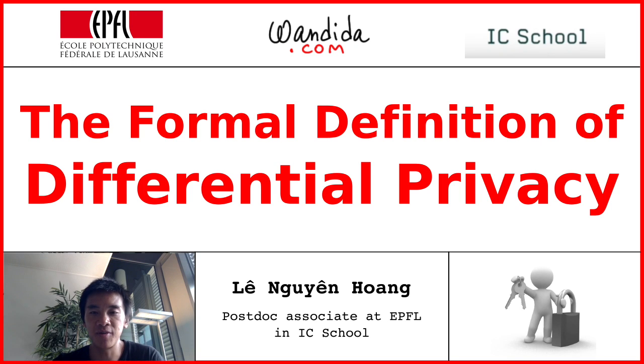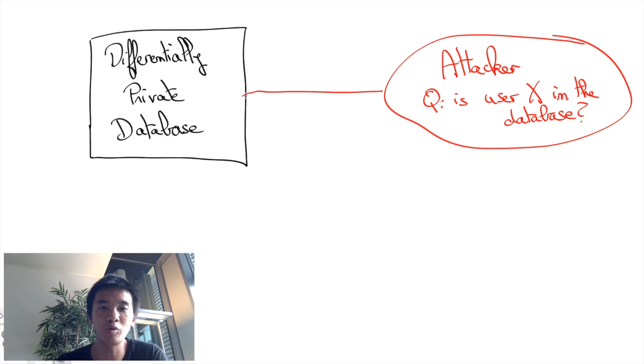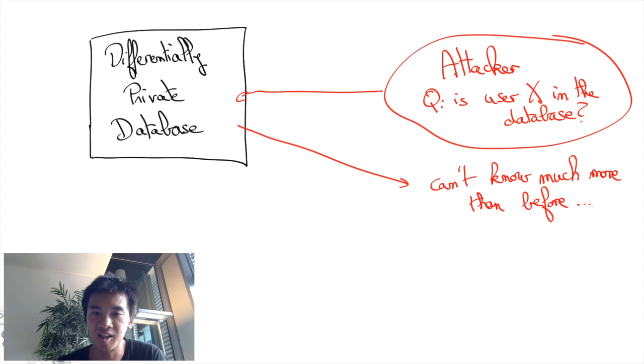In this video we will provide the formal definition of differential privacy. The basic idea of differential privacy is that it should be extremely hard for anyone to derive anything specific about any one particular person whose data are in a differentially private database.